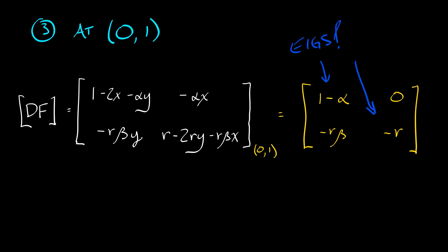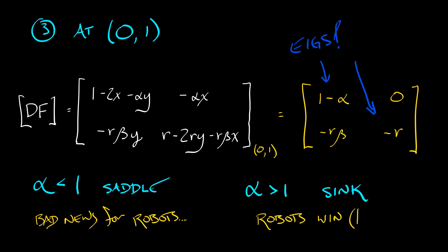If alpha is less than 1, then what we have is a saddle point, and that is bad news for the robots who like this equilibrium. If alpha is bigger than 1, we have two negative eigenvalues and we have a sink where robots win locally.